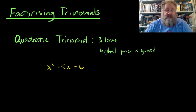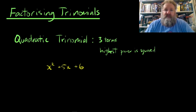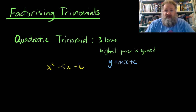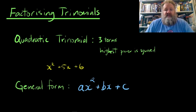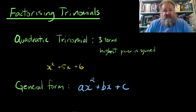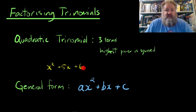Just like linear equations have the general form y = mx + c, quadratics have a general form too: ax² + bx + c. For our example, a is 1 (there's nothing written in front of x²), b is 5, and the constant c is 6.